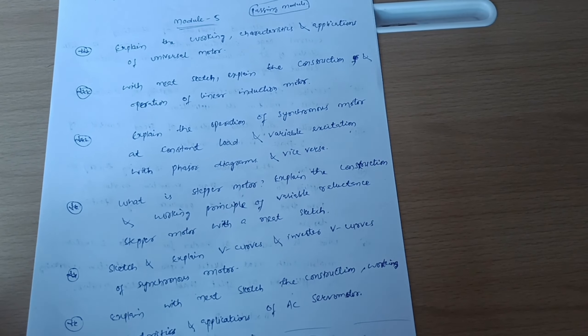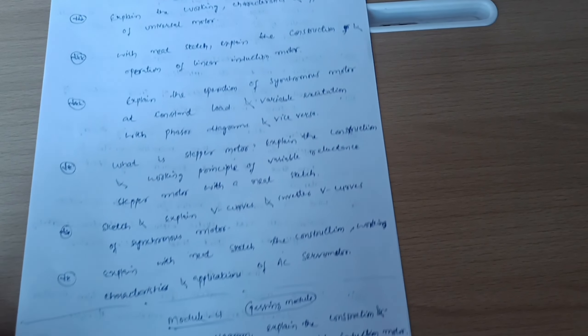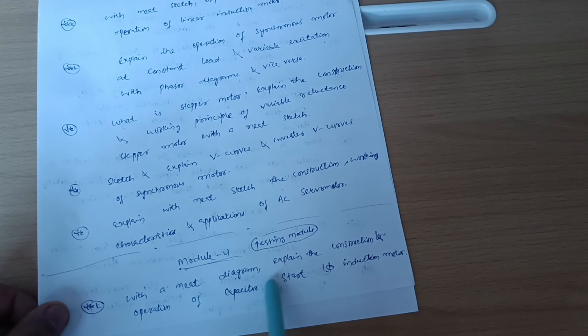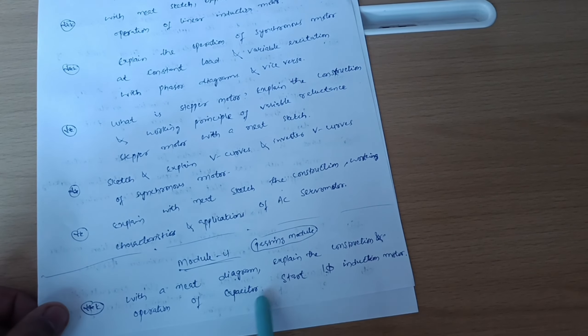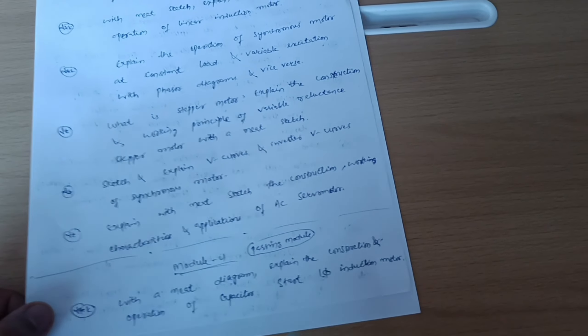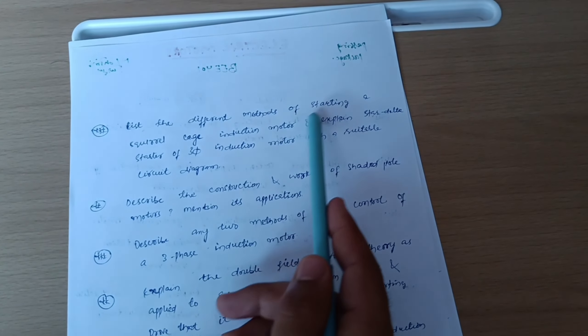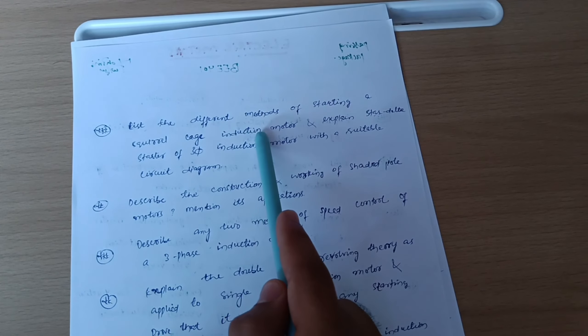Explain with neat sketch the construction, working characteristics, and applications of AC servo motor. These are the six questions which you have to cover from Module 5. Next passing module is Module 4, in which you have to cover questions like: with a neat diagram, explain the construction and operation of capacitor start single phase induction motor.